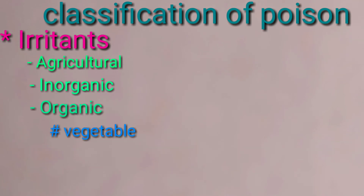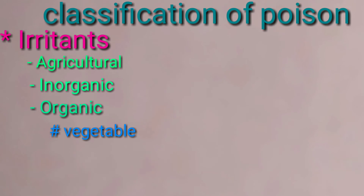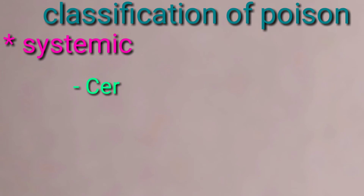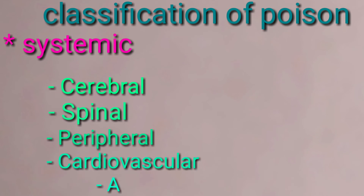Organic irritants — vegetable: castor, calotropis, abrus precatorius, and carrot. Animal: cantharis, insect bites, snake venom, and ptomaine.